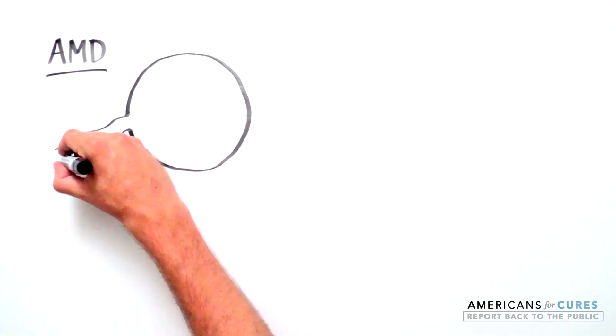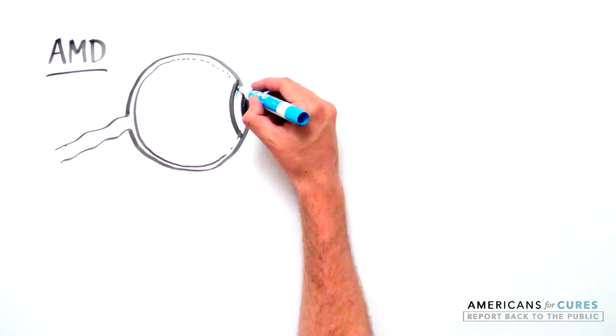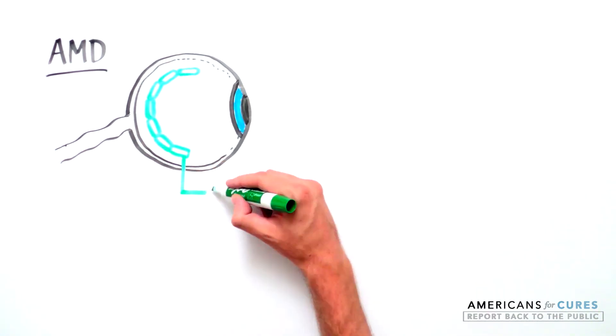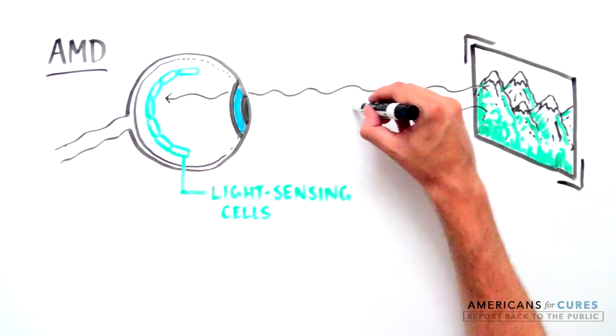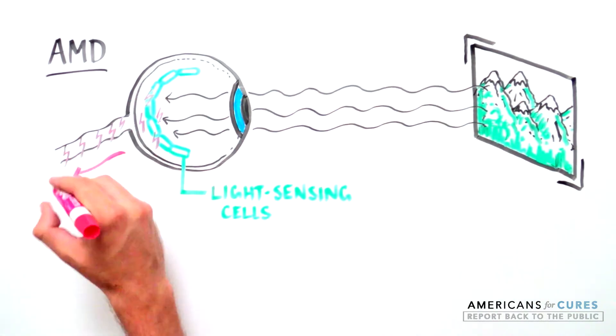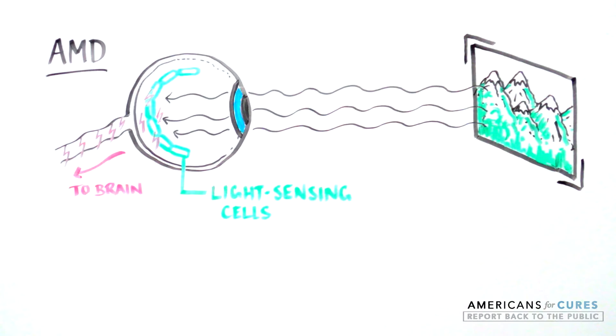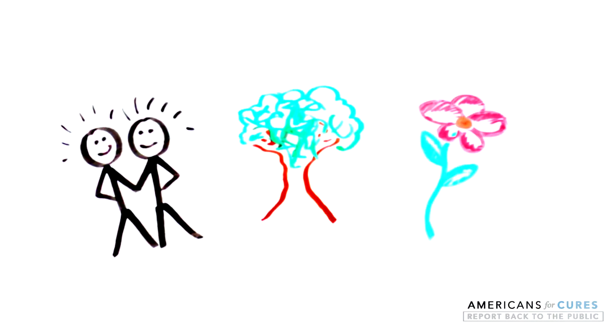AMD is caused by the degeneration of light-sensing cells in the eye, specifically in the part of the eye known as the retina. Normally, we are able to see because these cells in the eye take in the light from the world around us. Then, they send it in the form of electrical impulses to our brain, allowing us to perceive the images that surround us, the people, the trees, the flowers.